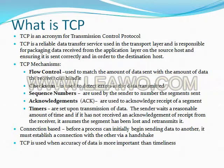If the checksum calculated by the sender is different than the one calculated by the receiver, the data is most likely corrupt. If the checksum is the same, the data is assumed correct. Sequence numbers are used by the sender to number the segments sent. Using this number, the receiving host can verify not only that it has received all of the segments, but can assemble them in the correct order.